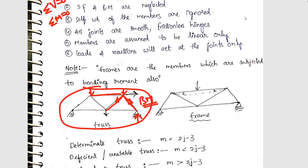Why won't there be any bending moment? For example, if we have an axial force in a member, it is passing through a point. What is your moment? Force into distance. The perpendicular distance, since the force is passing through the point, is nothing but zero. Therefore, force into distance — which is moment — is zero. Therefore there won't be bending moment in any member of the truss.